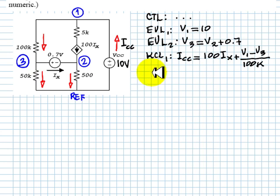KCL for node number two. For this node, 100 times Ix comes this way, and Ix comes this way. So the total current entering node two is 101 times Ix, and the current leaving that node is V2 over 500.